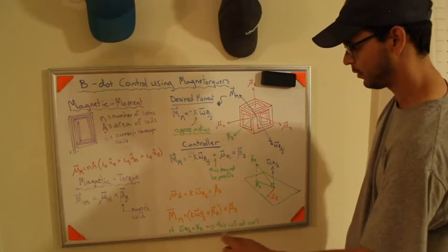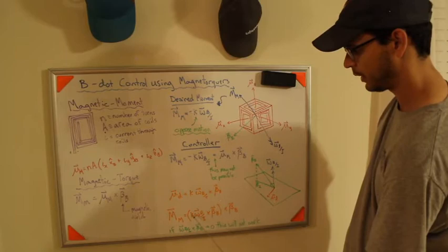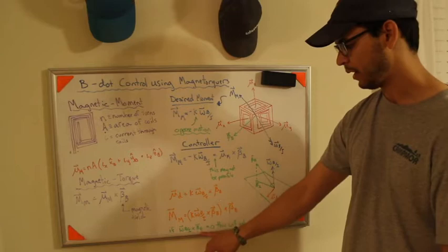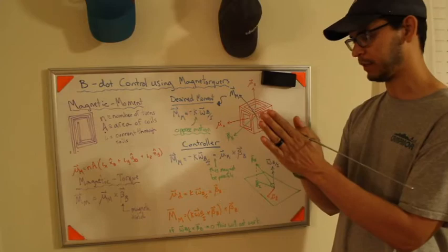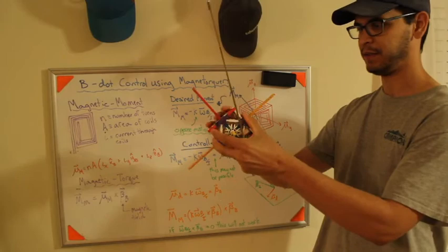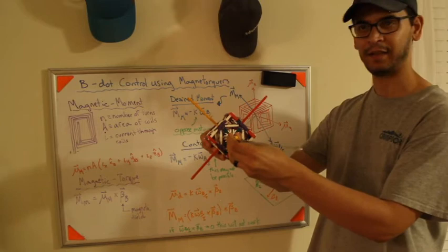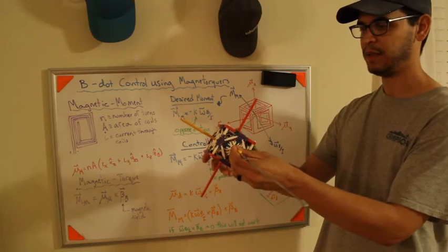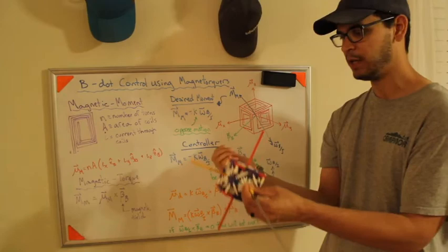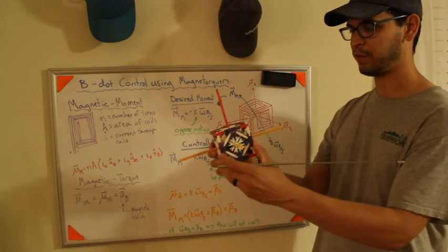Now what happens is if you take this mu desired and you plug it back into this magnetic torque, mu m cross B, you're going to get K omega cross B, that vector cross B. And so you'll notice that your torque will be zero if omega and B, the cross product is zero. And what that means is, remember what a cross product is, a cross product is when your two vectors are collinear. So that means if your satellite is spinning on this axis and your magnetic field is on this axis, there is nothing you can do with magnetorquers to slow you down.